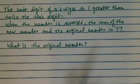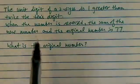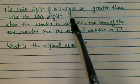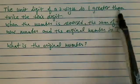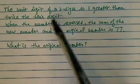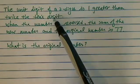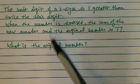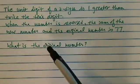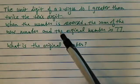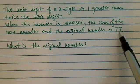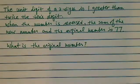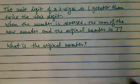This is an interesting problem. The unit digit of a two-digit number is one greater than twice the tens digit. When the number is reversed and you add the old number and new number together, you have 77. I want to know what the original number is.